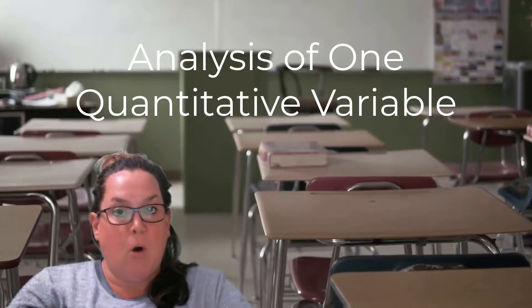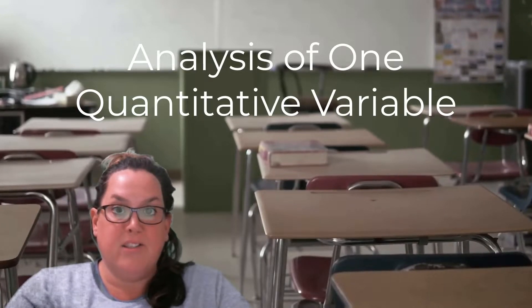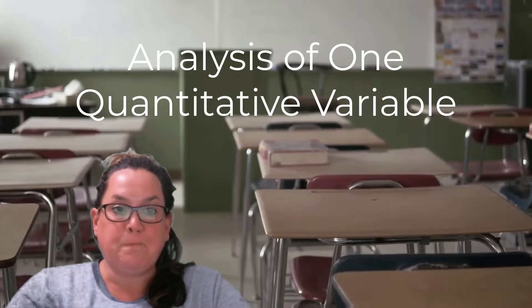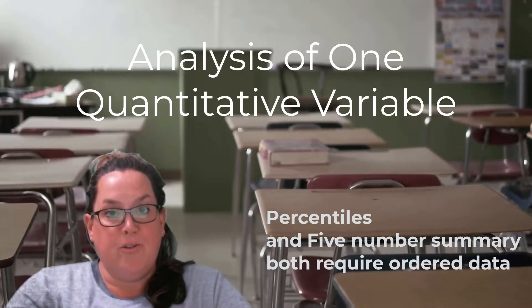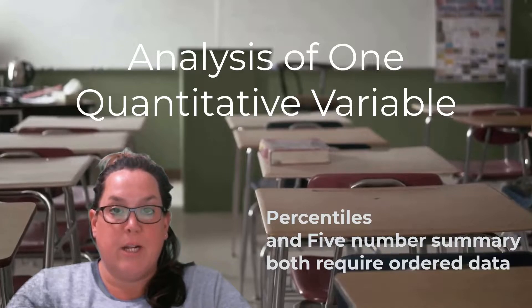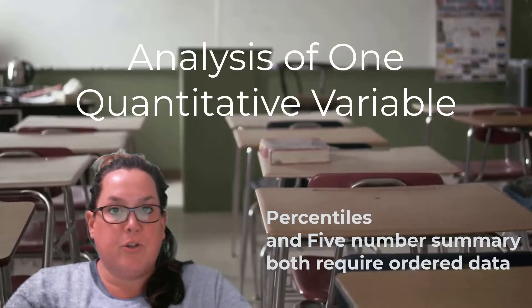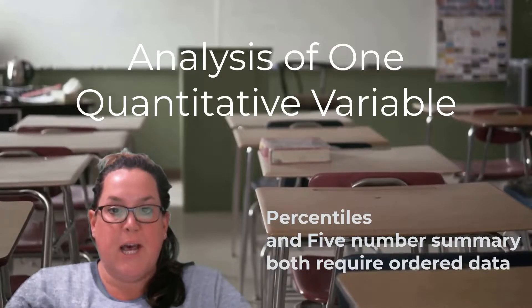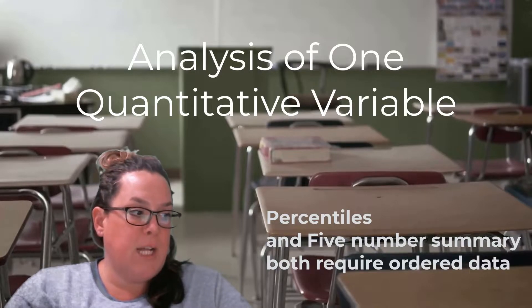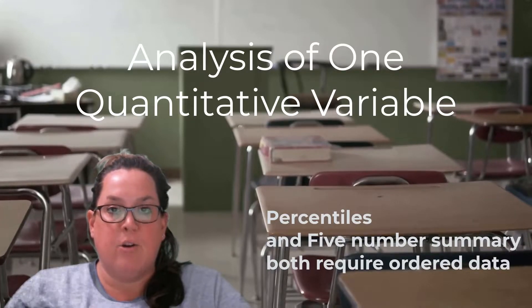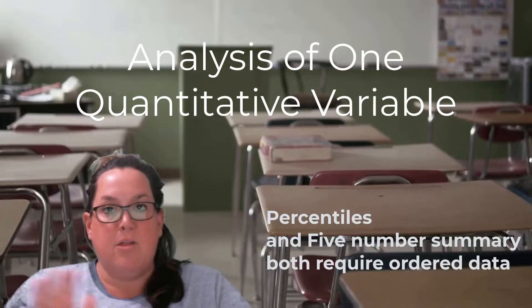For the numeric summaries that we dealt with, we started with percentiles and the five number summary. Remember that those two things require that your data be ordered because when you describe them, for example with percentiles, you have k percent of the data values that are less than or equal to that kth percentile.